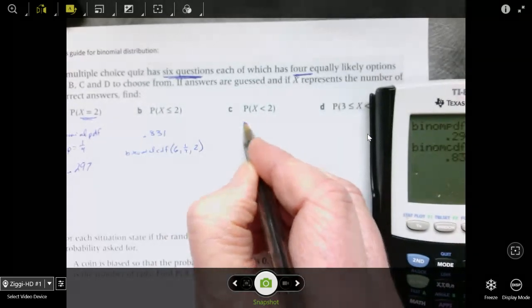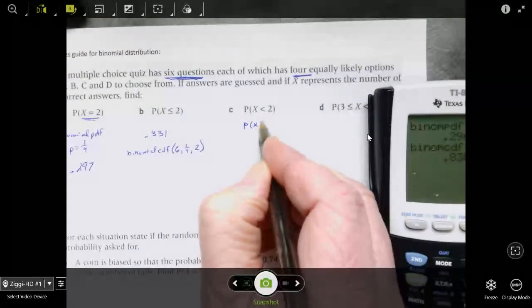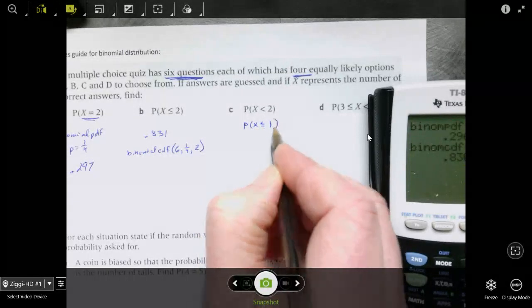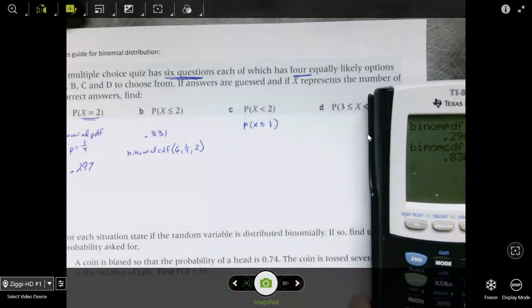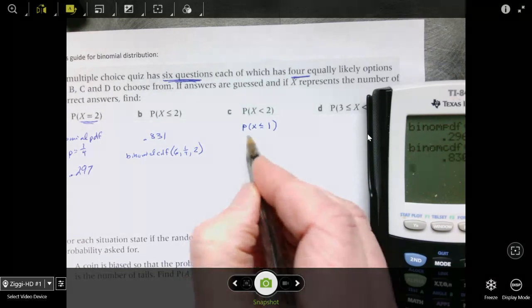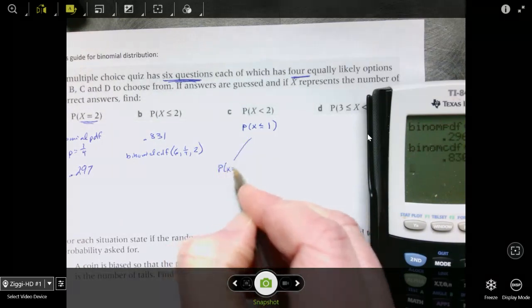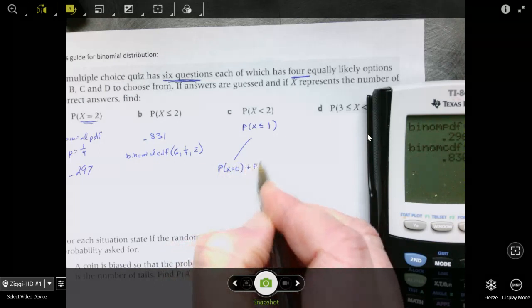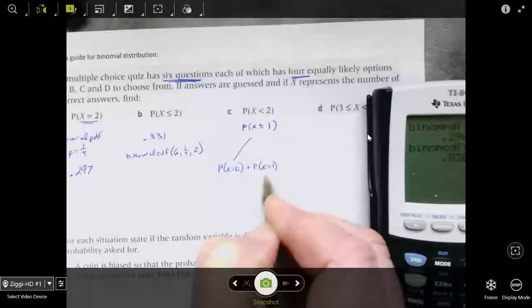So I could do this two ways. I could use my PDF and add the probability that x equals 0 plus the probability that x equals 1. Or I could do it all in one step and do the probability that x is less than or equal to 1 using the CDF.